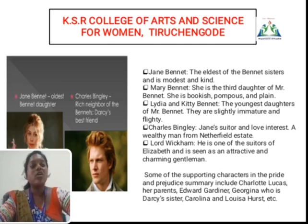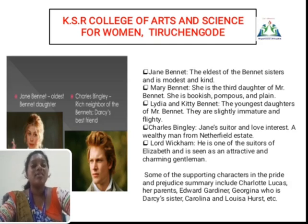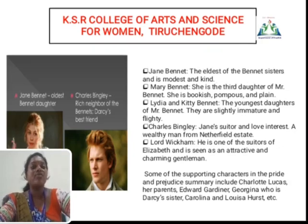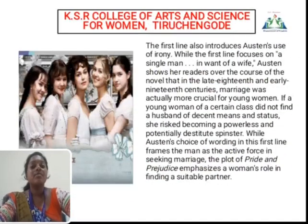The next character is Charles, who wants to marry Jane Bennet. Charles is a very wealthy person. Charles' friend's name is Darcy. Darcy is also a very wealthy person and a very young man in this novel. So, there are many major characters and minor characters available in this novel.